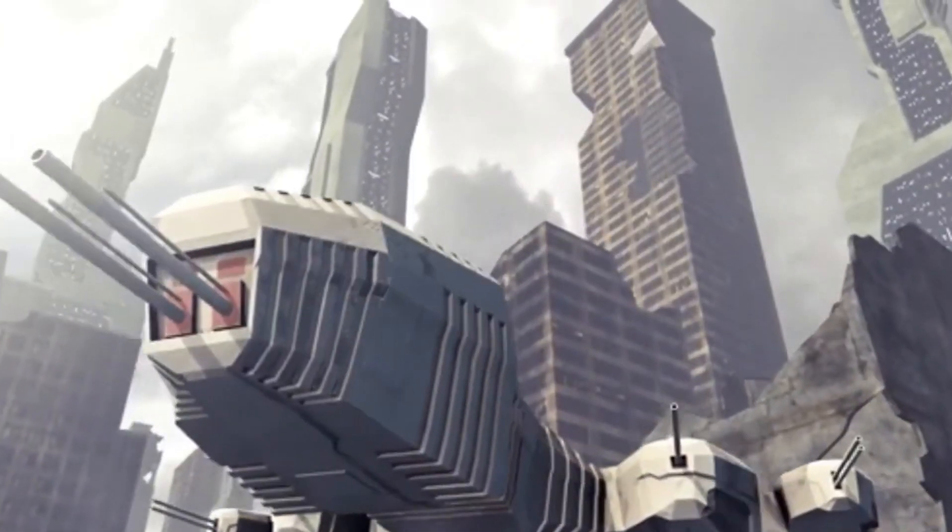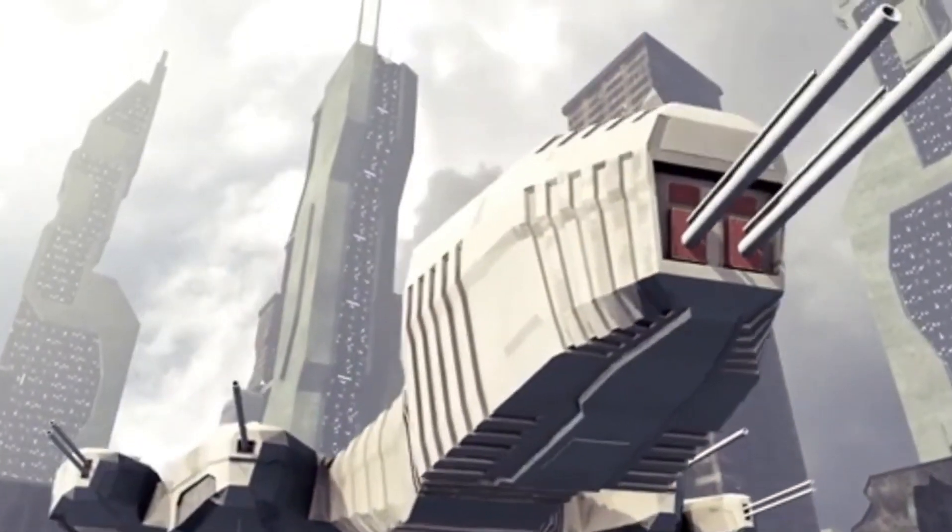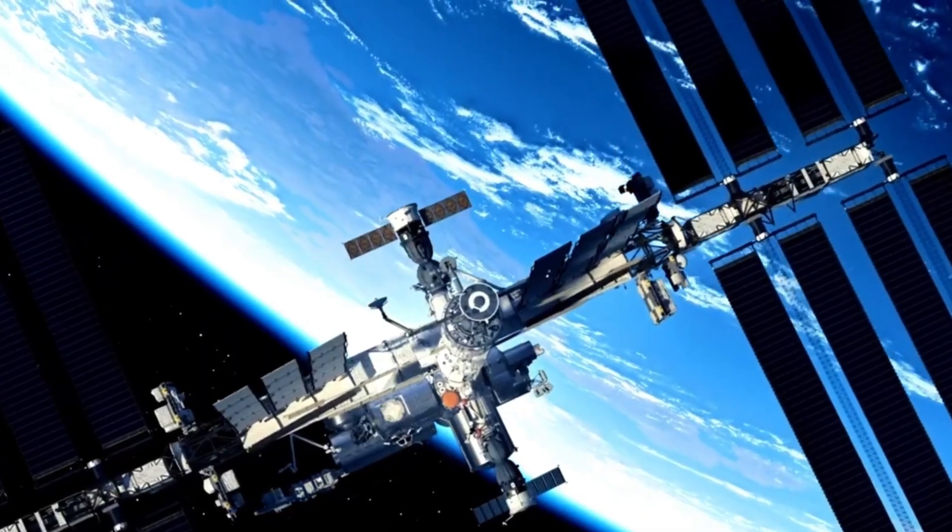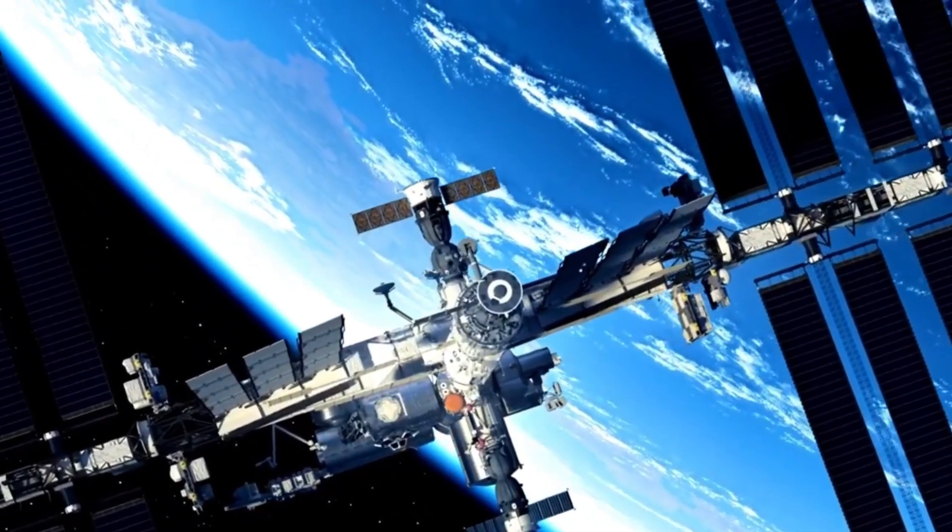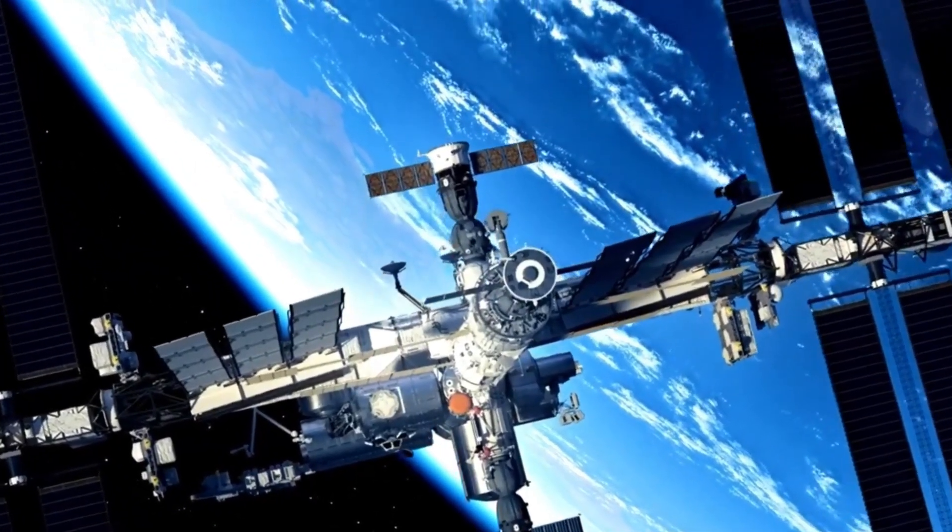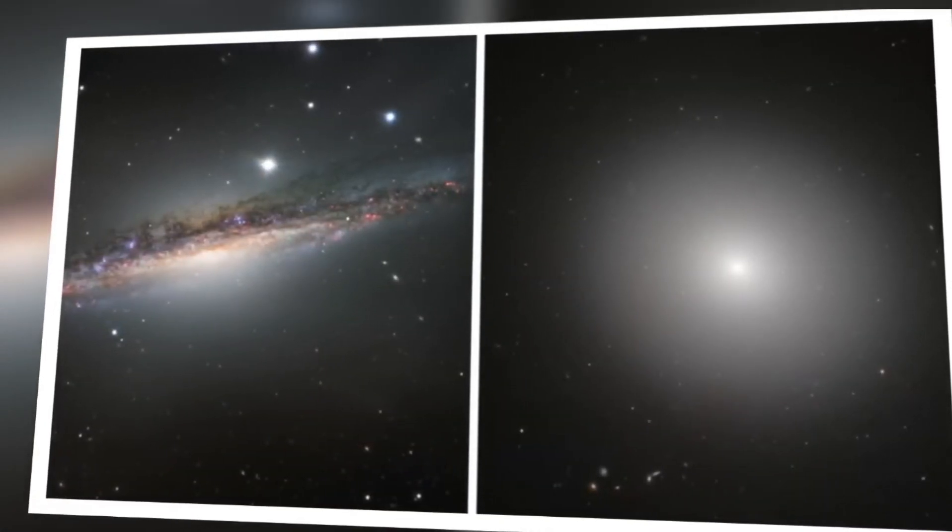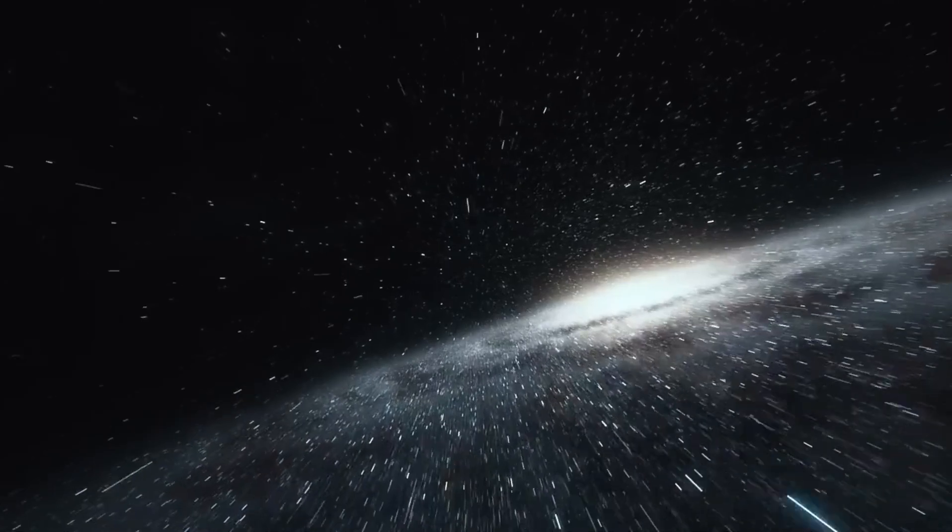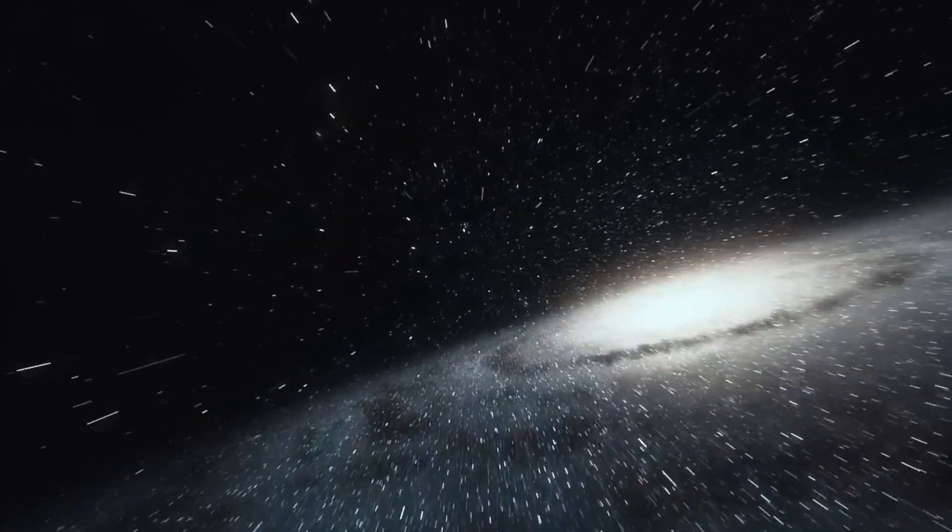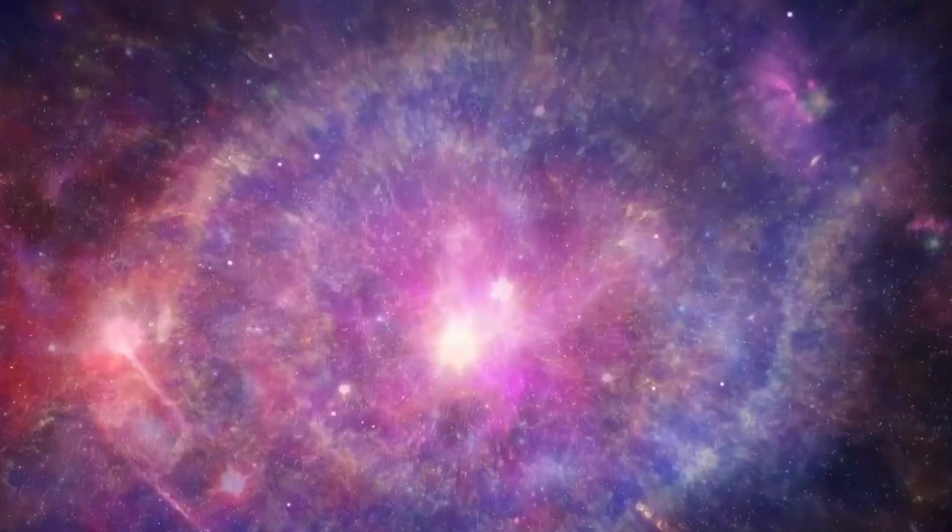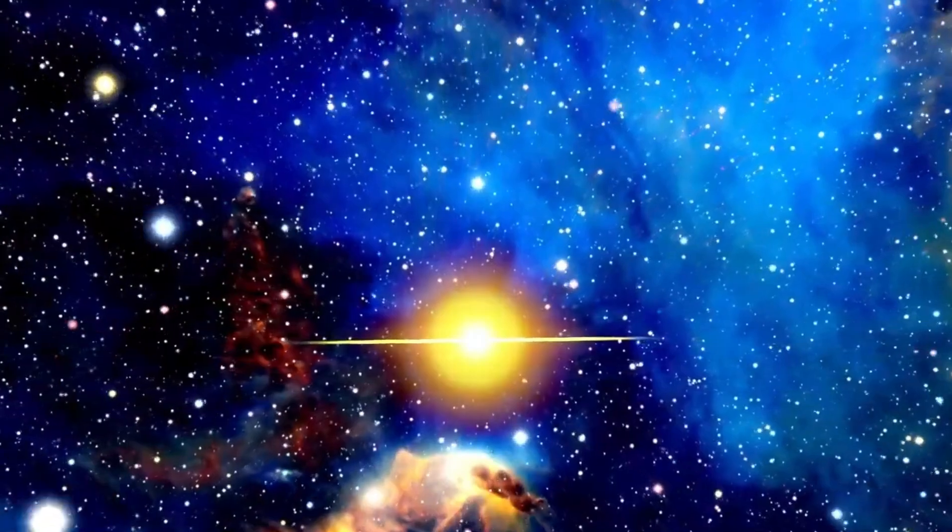When the James Webb focused its instruments on the well-known pillars of creation, it captured the famous dust clouds in remarkable detail. These pillars are situated in the constellation Serpens, about 7,000 light-years from Earth. The pillars of creation are part of the Eagle Nebula, huge clouds of gas and dust first imaged by the Hubble Space Telescope in 1995.